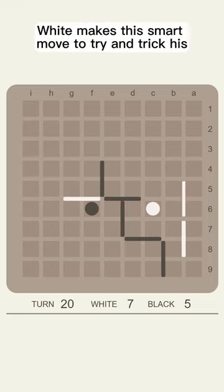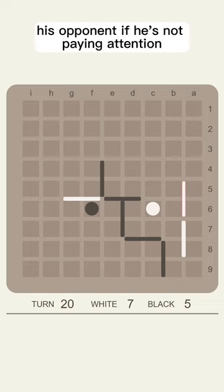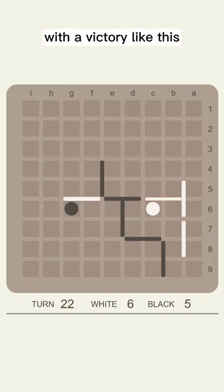At turn 19, White makes a smart move to try and trick his opponent if he's not paying attention, with a victory like this.